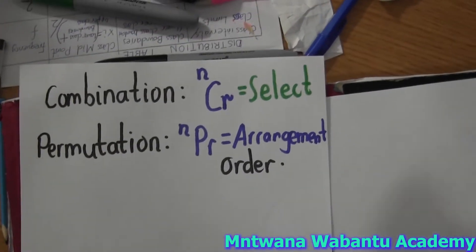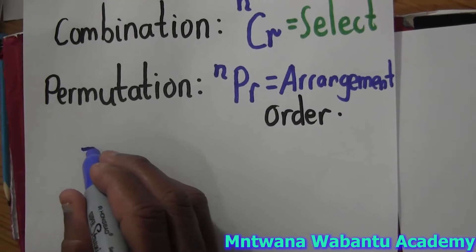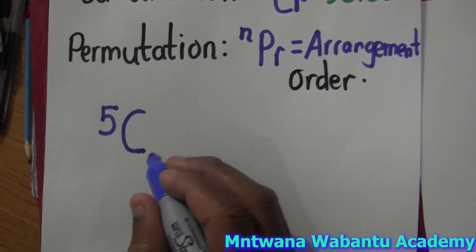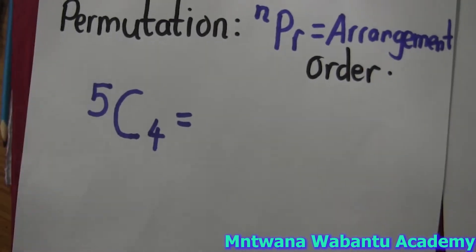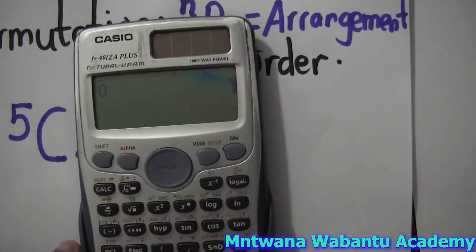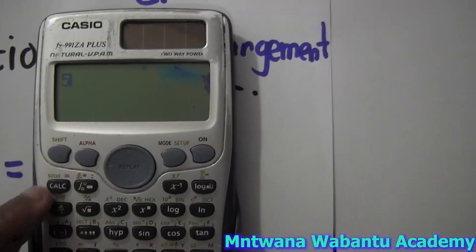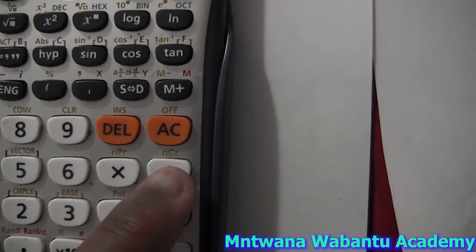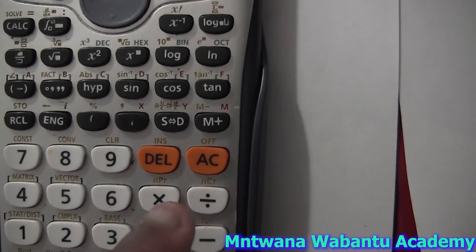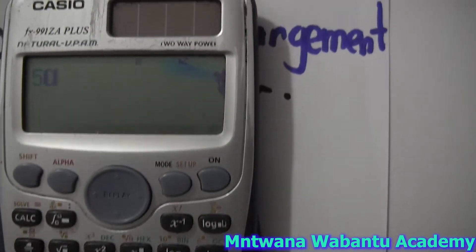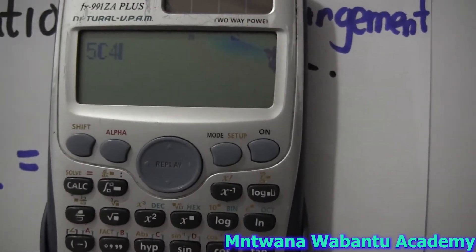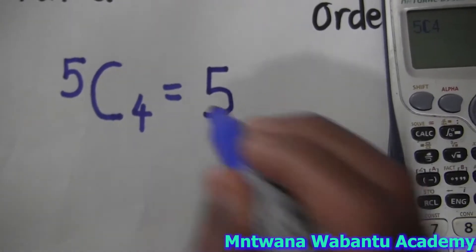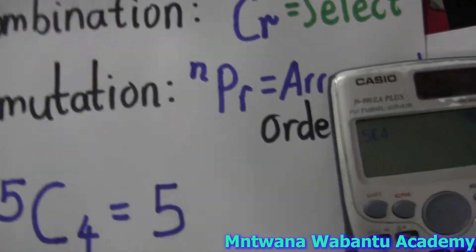We know we're going to use combination. The total number is now five, not seven anymore, because two have been excluded. Then we choose four. I'll show you how to use a calculator - take a calculator and enter five. Then press shift, then the combination button. Enter four and press equals. It gives us five. So the answer for the first part is five.